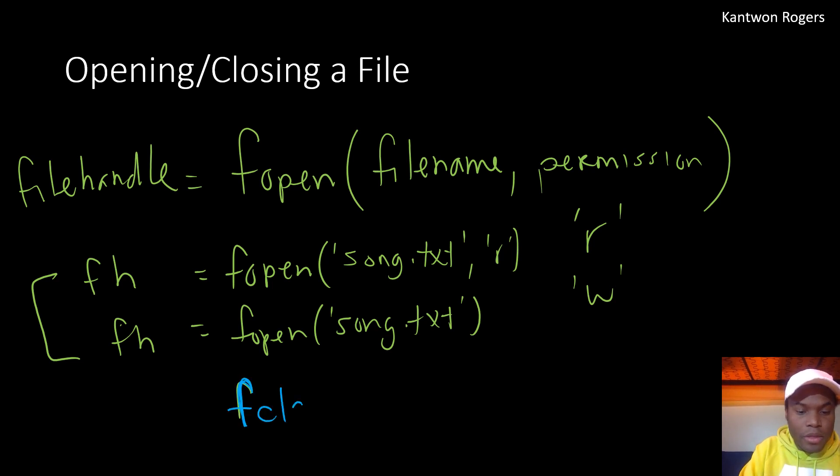fclose takes in as an input the file handle that you had gotten back when you had opened the file with either reading permissions or writing permissions. So once I have that file open, I can then go ahead and call fclose with the file handle as the input. There's no output for fclose. All it does is just close a file and it doesn't actually output anything for you. And that's it. So that's how you open a file with reading permissions and writing permissions. And that's also how you close a file after you're done using it.